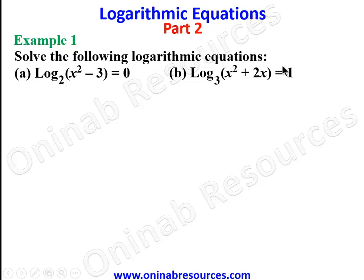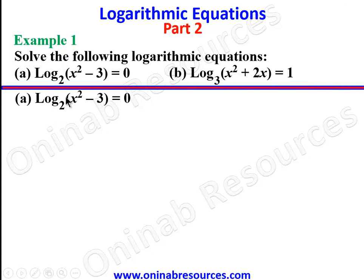We start with Problem 1: solve the following logarithmic equations. Part (a): log of (x² − 3) to base 2 is equal to zero. Part (b): log of (x² + 2x) to base 3 is equal to 1. Starting the solution from (a), we apply the relationship between indices and logarithm, so we now have x² − 3 equal to 2 raised to the power zero.